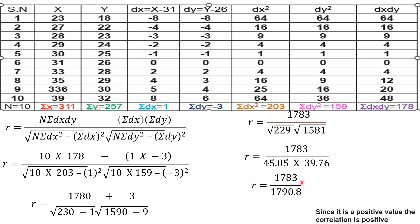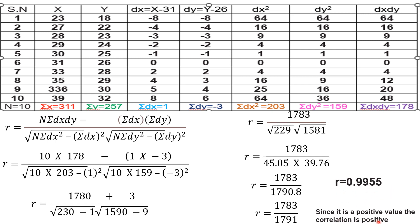Checking the options, after calculating r is equal to 0.9955. Since this is a positive value, the correlation is a positive correlation. This is the final answer for the Karl Pearson correlation coefficient question.